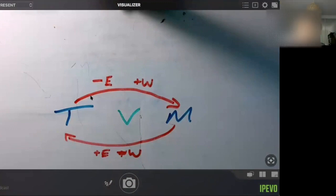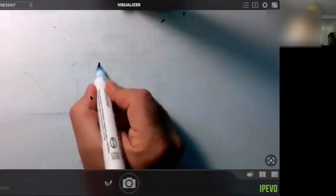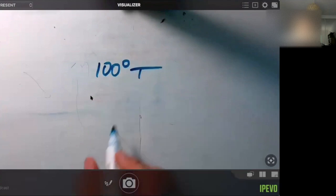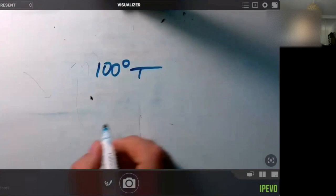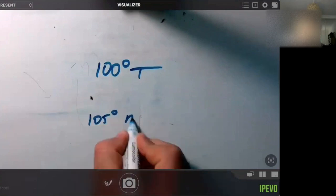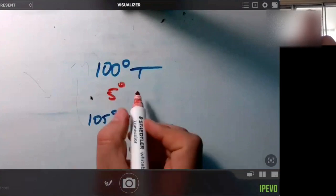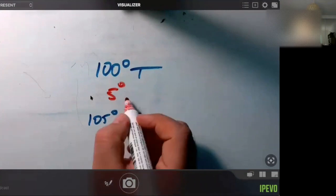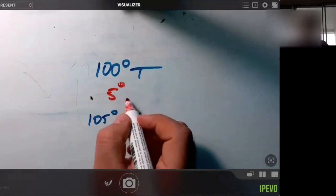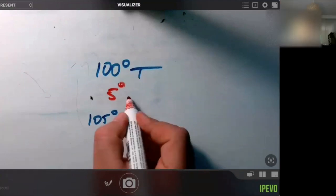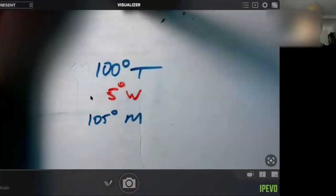So let's do a couple examples. If I have 100 degrees true and I have 105 degrees magnetic, what's going to be my variation here? Five degrees. Five degrees which way, east or west? True to magnetic... west. That's it, west. Excellent.